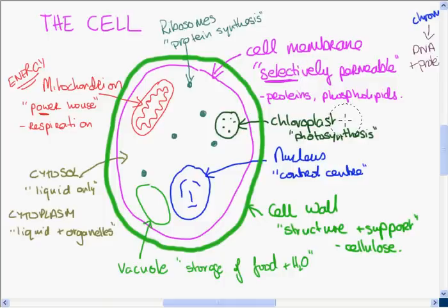So in the plant cell, we have the chloroplast, we have the cell wall, and we have the vacuole. Everything else is in both the plant cell and the animal cell.